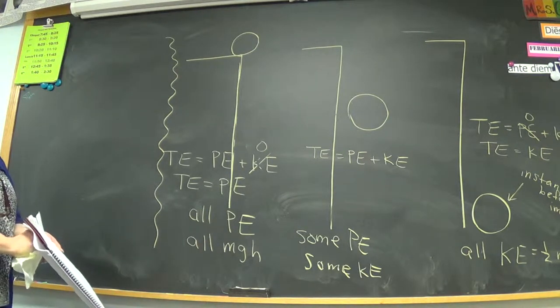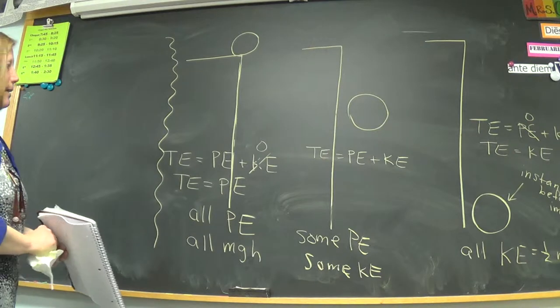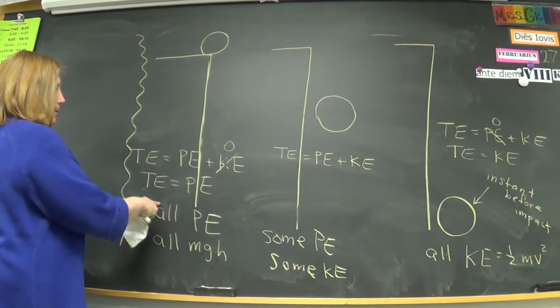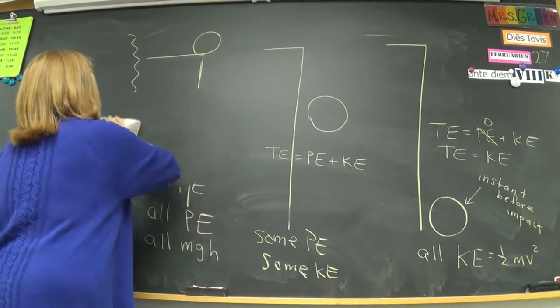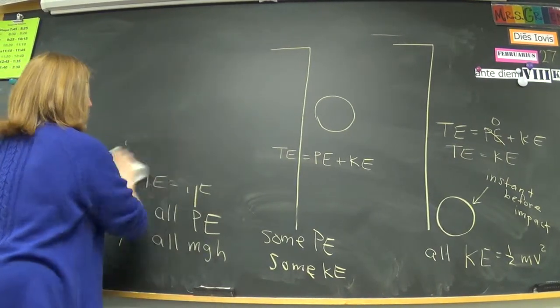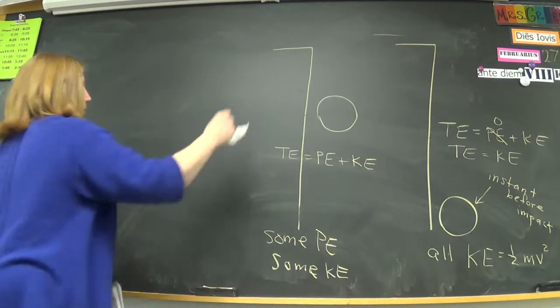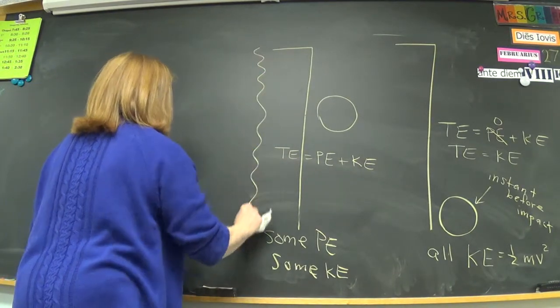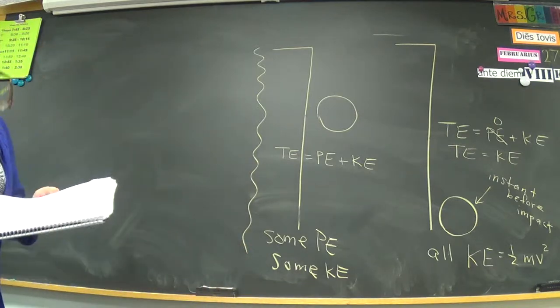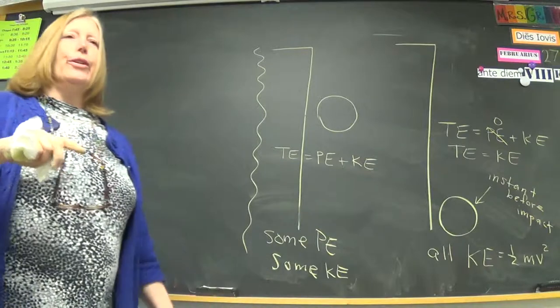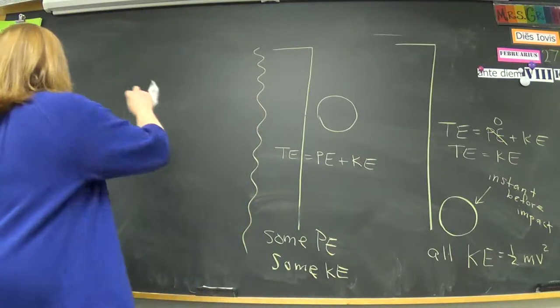I need more board space here. If I wrote smaller, I could have more sections on my board here. All right, here it is. I want you to draw a roller coaster. We're going to be on a roller coaster all day today. There we are. Visions of Hershey Park.